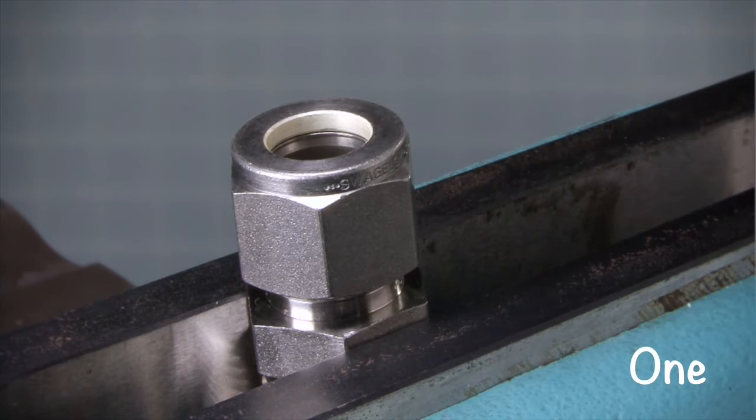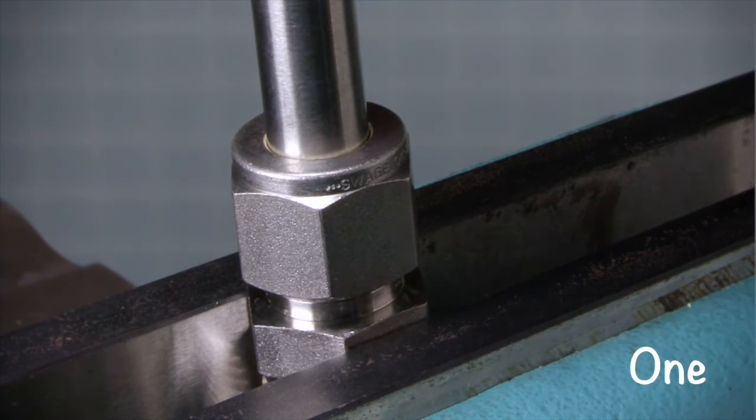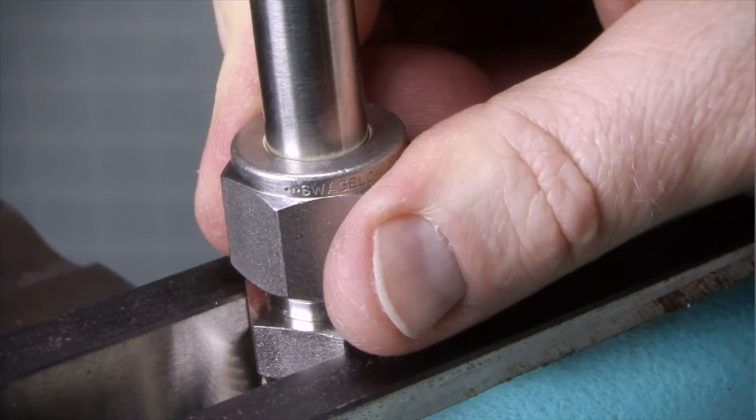Step 1. Fully insert the tube into the fitting and against the shoulder. Rotate the nut to make sure it is finger tight.